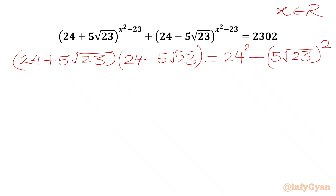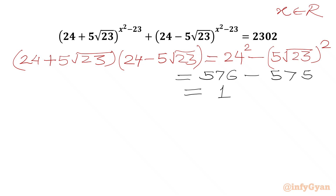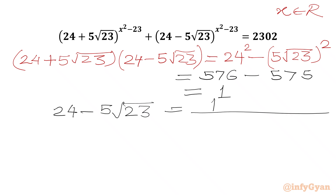We can write 24² − (5√23)², which is a² − b². Now 24² is 576, and (5√23)² is 25 × 23 = 575. So the value will be equal to 1. We can divide both sides by (24 + 5√23), giving us 24 − 5√23 = 1 / (24 + 5√23).